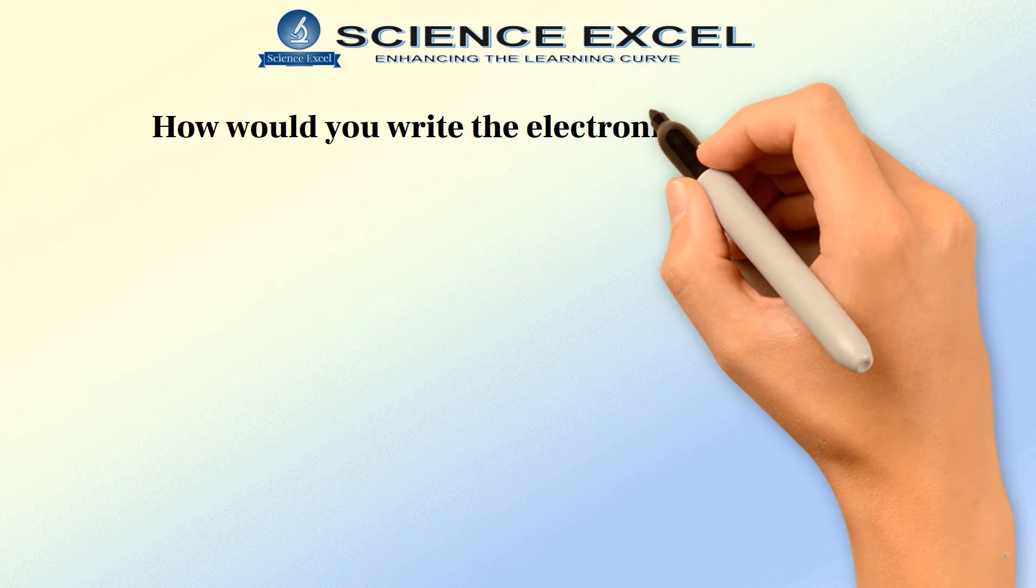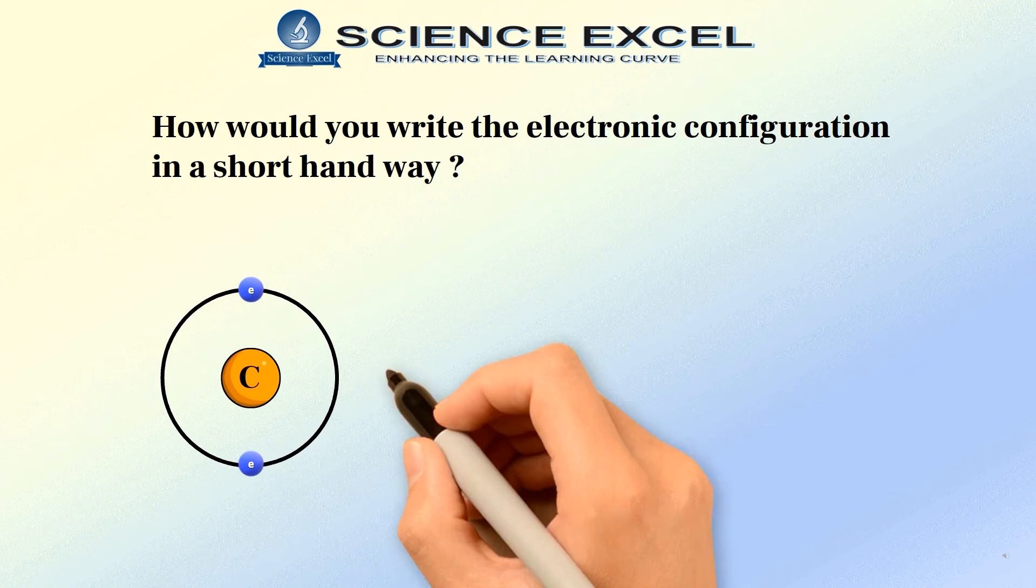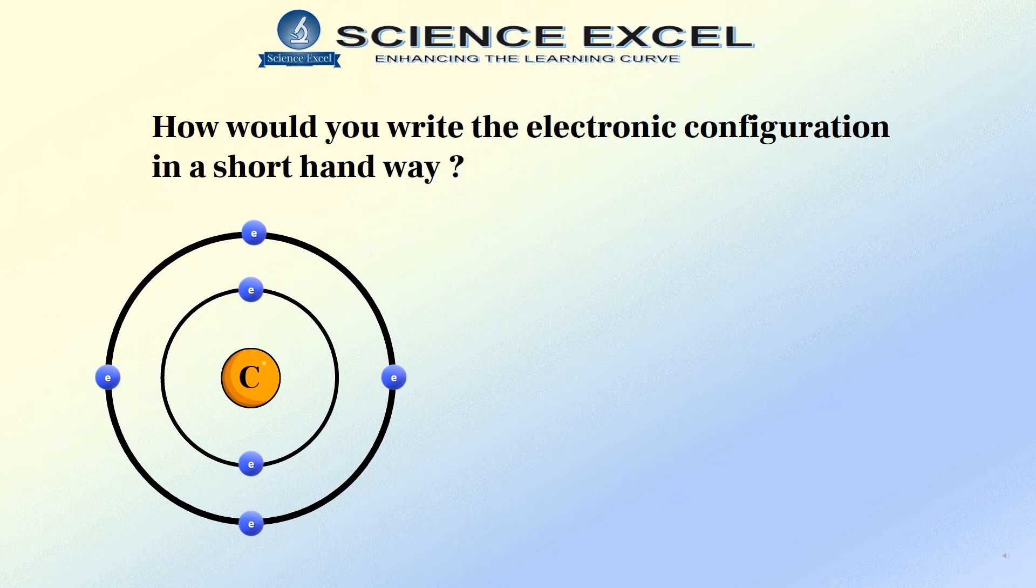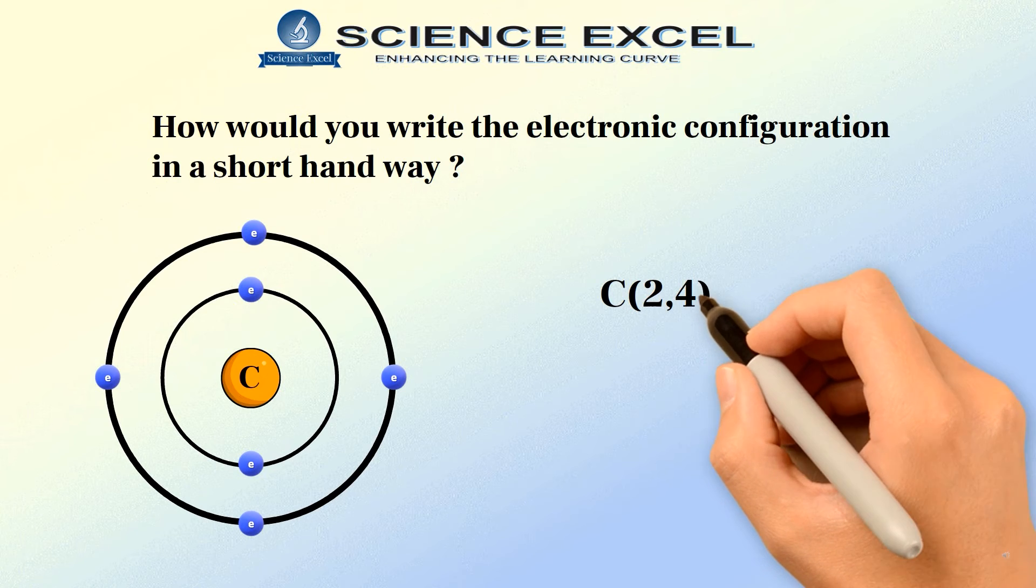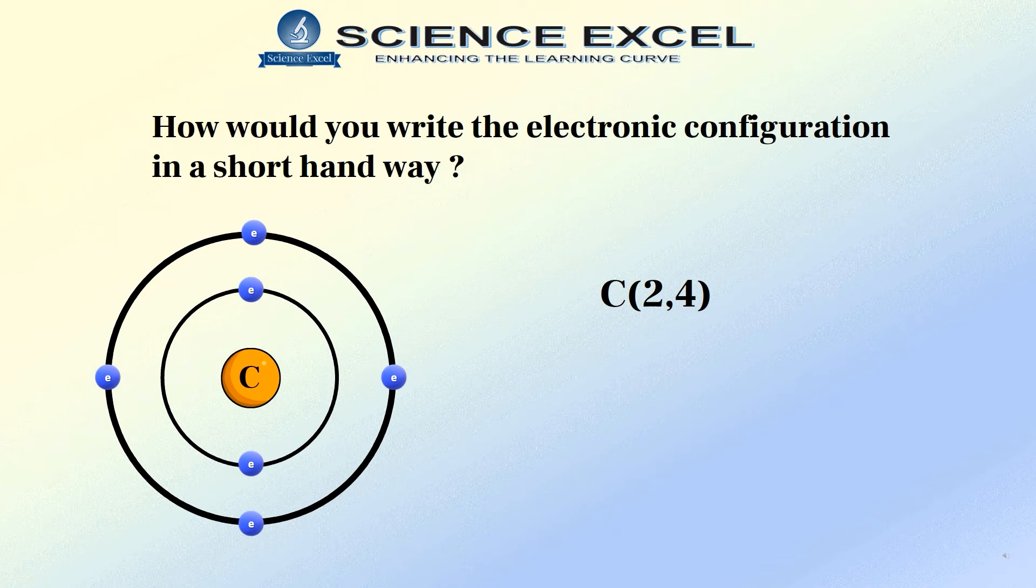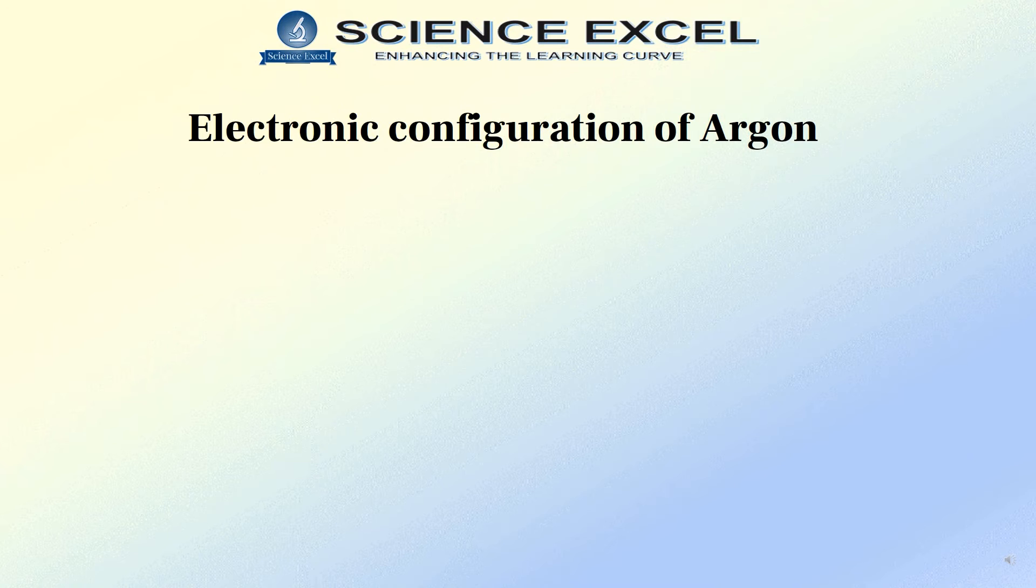Do you know that there is a shorthand way of writing the electronic configuration? The electronic configuration of carbon can be depicted as a symbol of carbon followed by 2,4 which tells us that shell K has 2 electrons and shell L has 4 electrons.